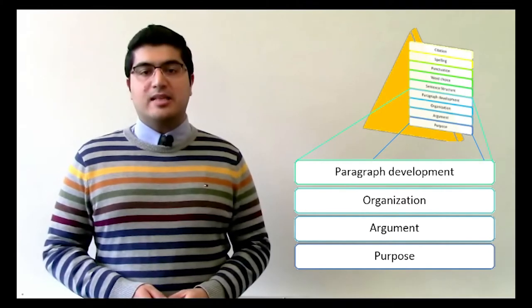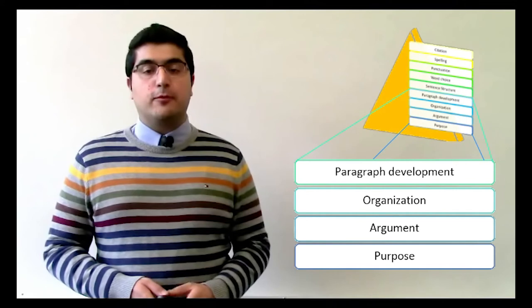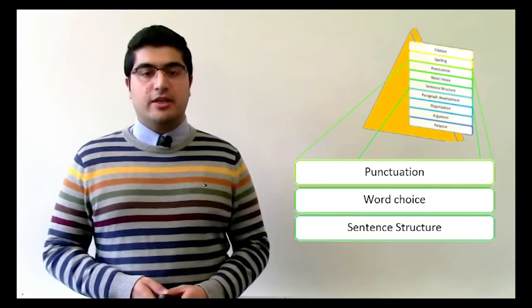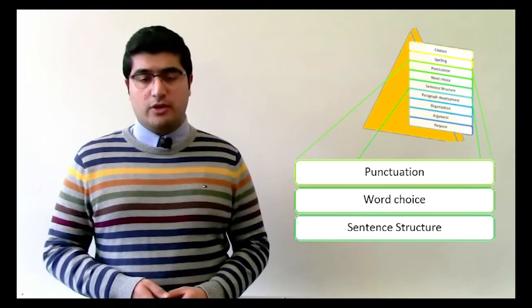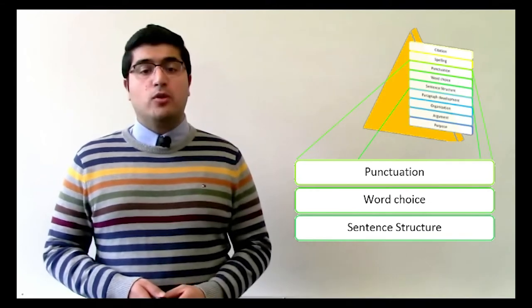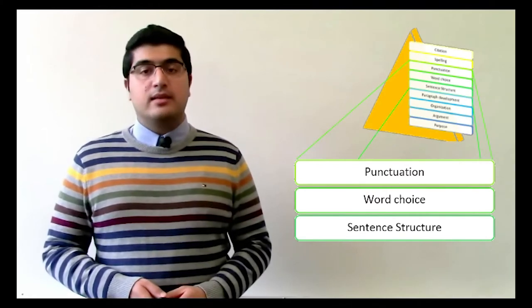Once you're happy with the basic aspects of your paper, you can start the second round of editing, in which you will focus on sentence level issues. Find and fix grammar errors and try to improve your word choice and punctuation. Again, you do not have to worry about spelling and citation at this stage, since your draft still might change.